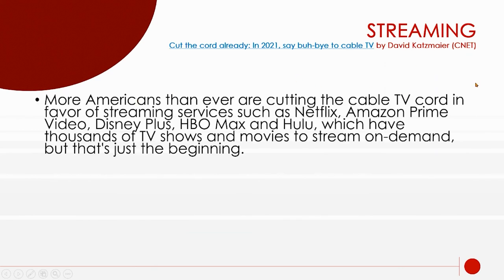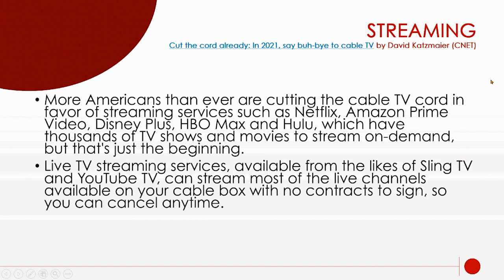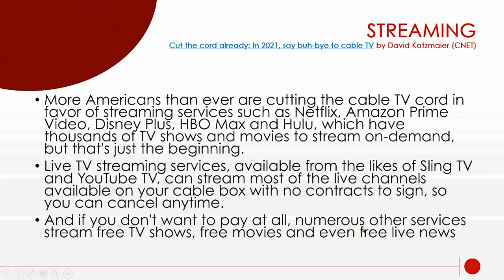Many Americans are cutting the cable and going to streaming services, which has really picked up because of the pandemic. Live streaming services like Sling TV and YouTube TV are almost like old cable systems — you can buy one service that has all the stations, including local broadcast networks, which is important to a lot of people. If you don't want to pay at all, there are free streaming services and free live news out there, though you still have to pay for internet.